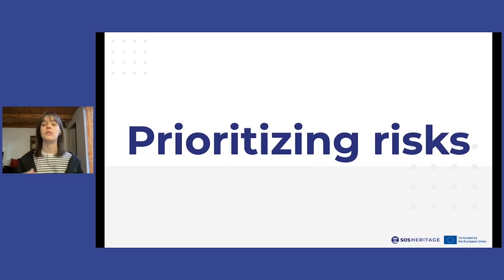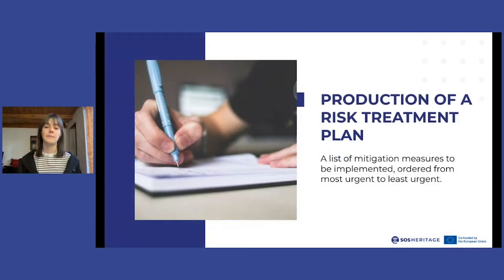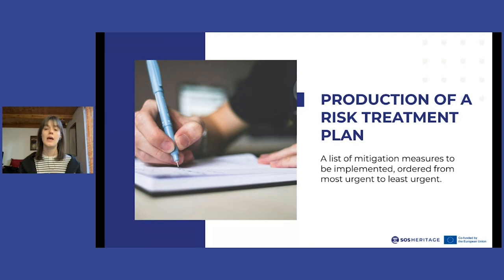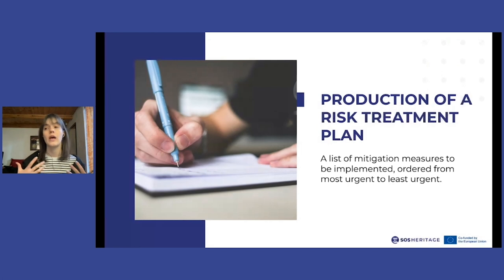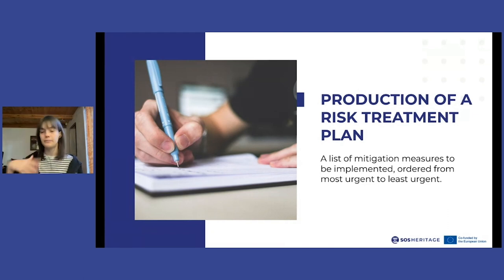We have to understand which risks are the most urgent, because of the vulnerabilities of the assets we are preserving as well as the overall context in which cultural heritage is preserved. A very important tool is essentially a list of all mitigation measures that should be implemented as soon as possible, ordered from the most urgent to the least urgent. This risk treatment plan is extremely useful for cultural heritage institutions because operators can understand which activities to put in place right away and which can be planned with more time.